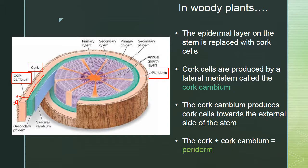In the cross-section of a woody stem, we have primary xylem in the center, phloem, xylem rays and phloem rays crossing through, secondary xylem, and secondary phloem toward the outside.